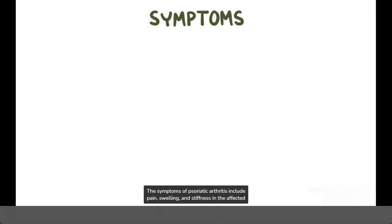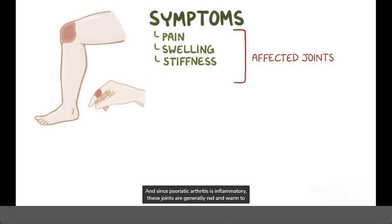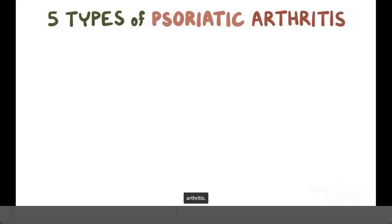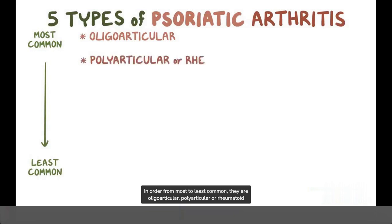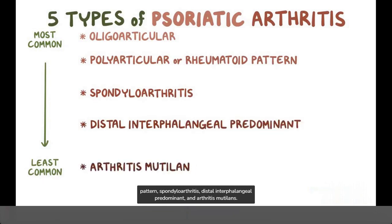The symptoms of psoriatic arthritis include pain, swelling, and stiffness in the affected joints. Since psoriatic arthritis is inflammatory, these joints are generally red and warm to the touch. Different joints can be affected, and there are five different types of psoriatic arthritis. In order from most to least common, there are oligoarticular, polyarticular or rheumatoid pattern, spondyloarthritis, distal interphalangeal predominant, and arthritis mutilans.